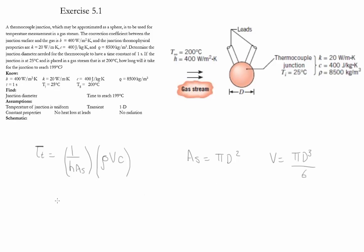We take these two and substitute it into tau t and it's simplified into 1 over h, density, diameter, heat capacity, over 6.